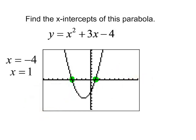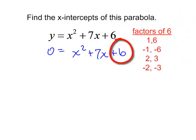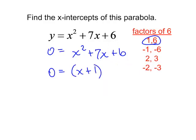Let's try another one. Find the x-intercepts of this parabola, y equals x squared plus 7x plus 6. In order to find the x-intercepts, I will let y equal zero. I will factor it. I will need the factors of 6 that when I add them I will get positive 7. I will choose to use 1 and 6, so that will be x plus 1 times x plus 6.